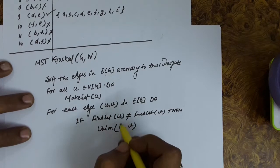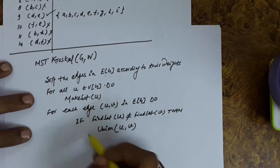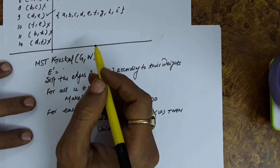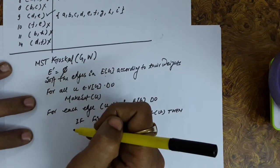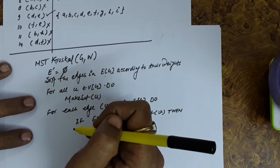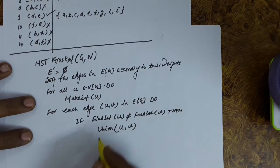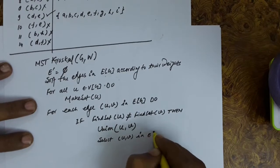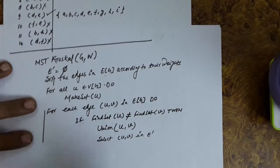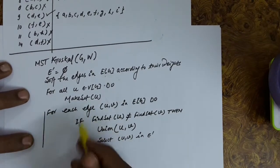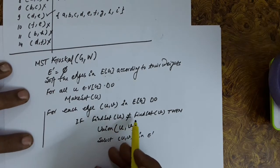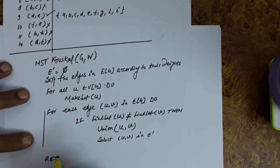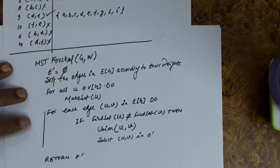If find set(U) and find set(V) are not equal, we perform union of the two sets containing U and V, and include edge UV in E' — the set of edges in the minimal spanning tree. Initially E' is empty (phi). After examining all edges and determining which are included in E', we return E' as the output — the minimal spanning tree edge set.